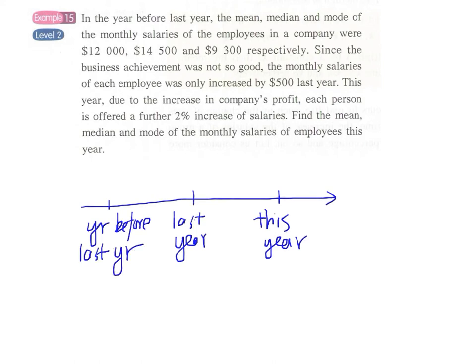And so from the year before last year to last year, each employee received a $500 increase in monthly salary. And from last year to this year, each employee received a further 2% increase in salary.